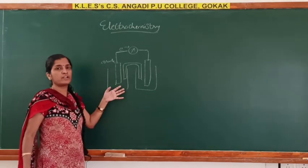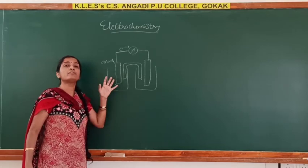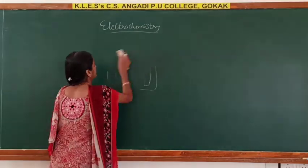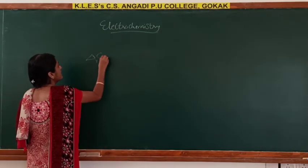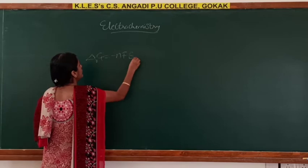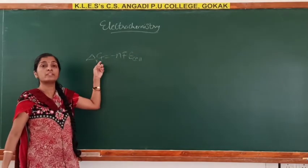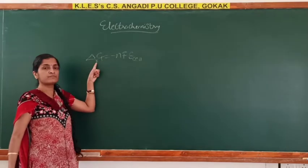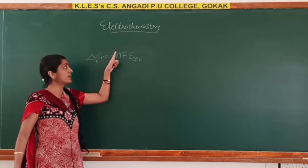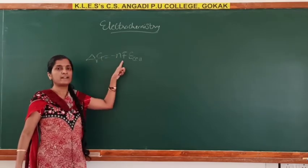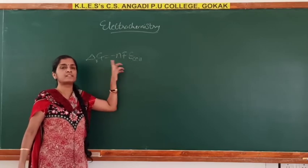There is a relationship between the Gibbs free energy of the reaction and the EMF of the cell, given by delta G_r equals minus nF times E_cell. Delta G_r means Gibbs free energy of the reaction. N is the number of electrons involved in the reaction. F is Faraday's constant, 96500 coulombs. E_cell is the EMF of the cell.